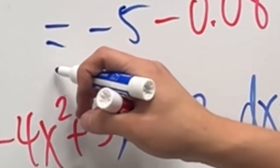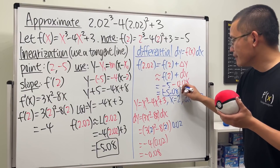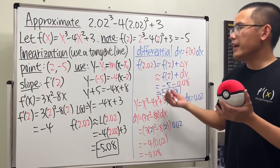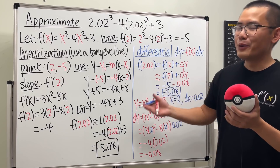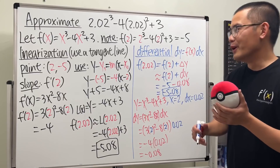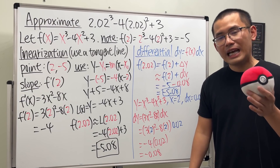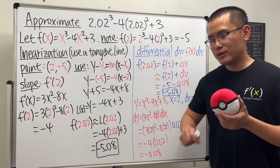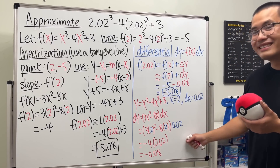Both methods give the same answer of -5.08 — which makes sense because they are essentially the same approximation, just approached differently. If you'd like, go ahead and complete this by hand and see how it compares.